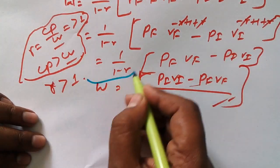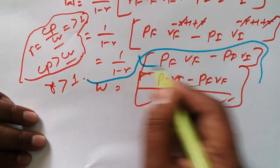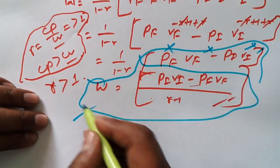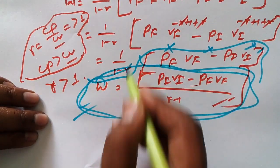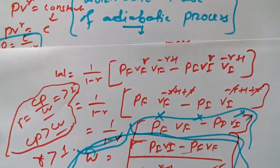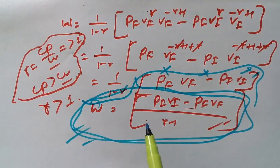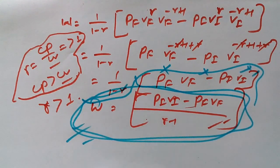So here you go, my dear. This is the formula for work done in case of adiabatic process. This formula we are going to use to find out work done.